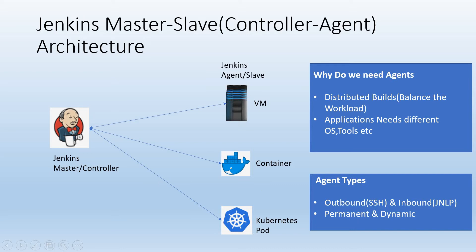So why do we need agents? Generally when we create jobs in Jenkins master, we can execute the jobs inside master itself. But as the number of applications increases, the resources inside master — CPU, memory, etc. — are not sufficient for executing more types of application jobs. So in that case we need to have separate machines or containers where we can execute our Jenkins jobs.